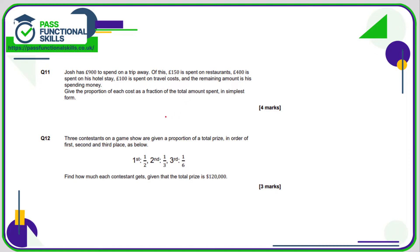First of all, we need to work out the total amount spent, although we are told that the total amount was 900. So out of 900, 150 of it is spent on restaurants. That's 150 out of 900.